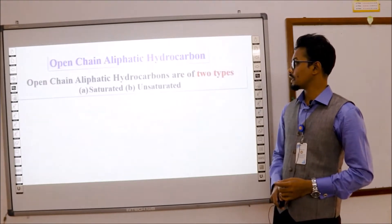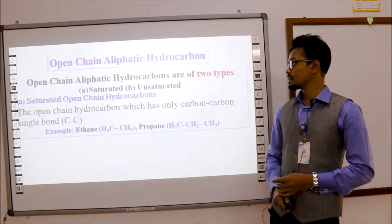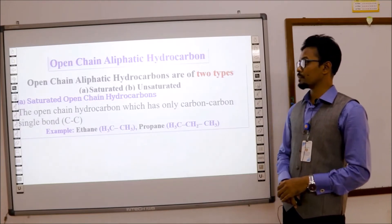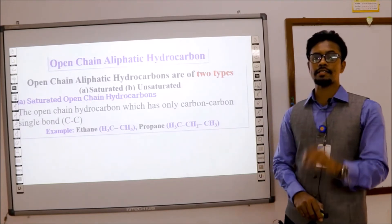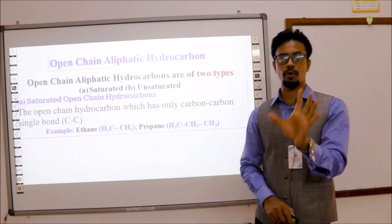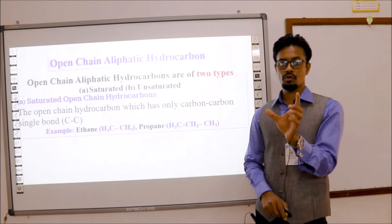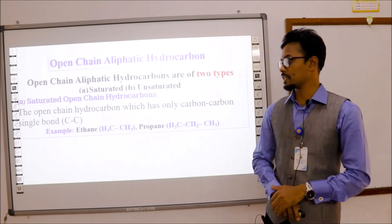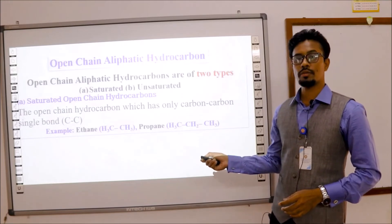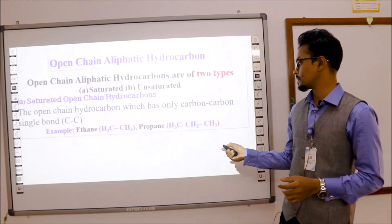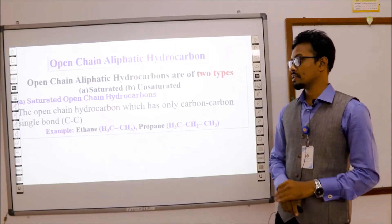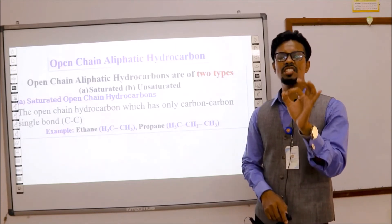Open chain aliphatic hydrocarbons are of two types: saturated and unsaturated. Saturated open chain hydrocarbons are those which have only carbon-carbon single bonds. For example, ethane has a carbon-carbon single bond, and propane also has carbon-carbon single bonds. These are called saturated open chain hydrocarbons.